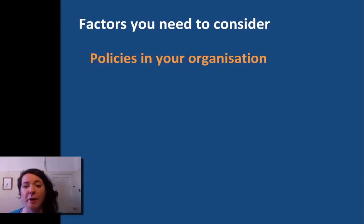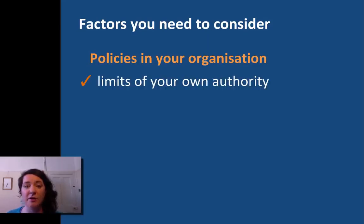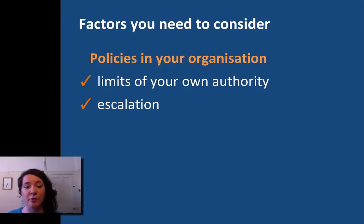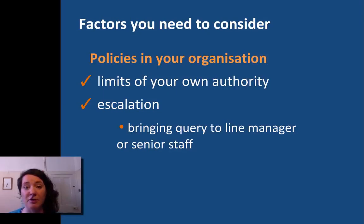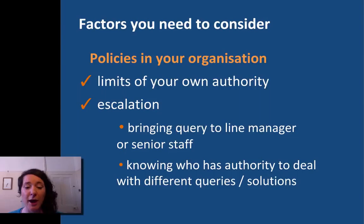The last factor to look at are the policies your organisation has in place. These will help you work out where the limits of your own authority are. For example, you may not have the authority to give a refund to a customer, so you'll need to know who does. This process is called escalation — when a complaint is brought from the first customer service person up a chain through management so that people with the right authority can deal with the problem. This might mean bringing the query to your line manager or a senior member of staff who does have the authority to offer different solutions.